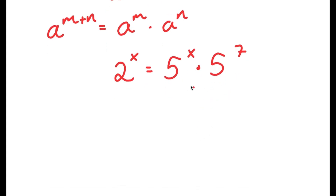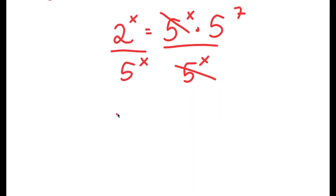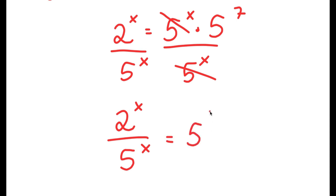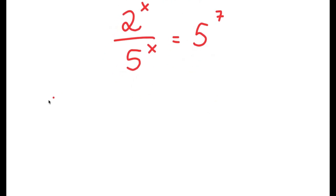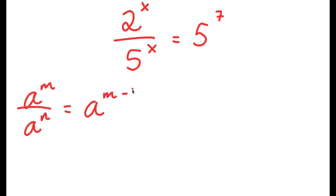Now from here, I'm going to divide both sides by 5 to the power of x. These two cancel out, and I get 2 to the power of x over 5 to the power of x is equal to 5 to the power of 7. An important property of exponents is that if I have something in the form a to the power of m over a to the power of n, this is equal to a to the power of m minus n.